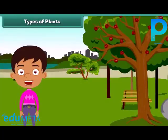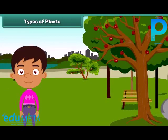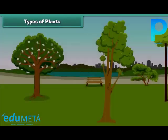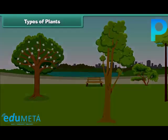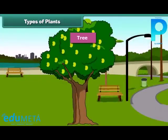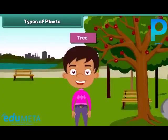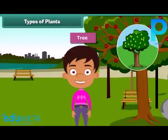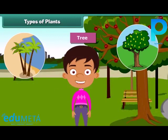Children, we often see different types of plants around us. We find that some plants are tall while some are small. Plants which are very tall and strong are called trees. For example, mango tree, coconut tree, and neem are tall.